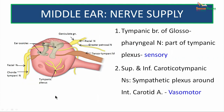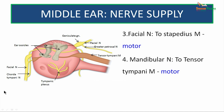The nerve supply of the middle ear: it is supplied by the tympanic branch of the glossopharyngeal nerve, which takes part in forming the tympanic plexus — a purely sensory aspect. The vasomotor component comes through the superior and inferior caroticotympanic nerves, which are part of the sympathetic plexus around the internal carotid artery. The facial nerve supplies the stapedius muscle (motor), and the tensor tympani muscle is supplied by the mandibular nerve of the trigeminal.